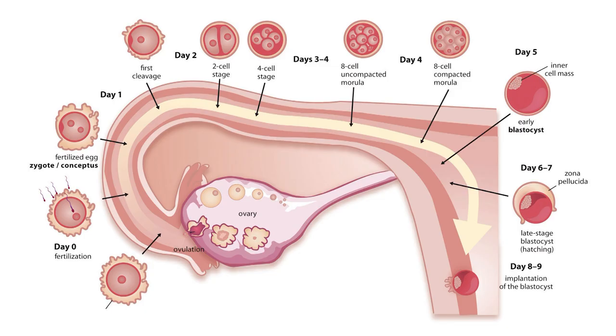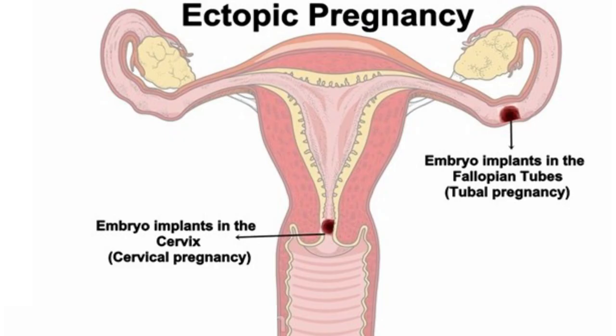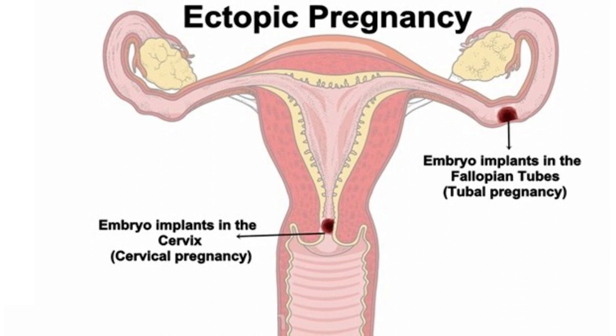The zygote will move down from the fallopian tube to the uterus and get implanted. If the blastocyst does not move into the uterus and remains in the fallopian tube, it will result in ectopic pregnancy. Ectopic means out of place.